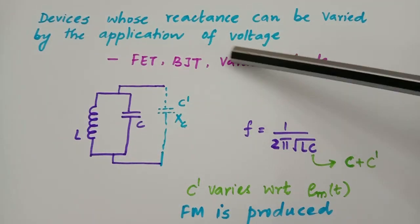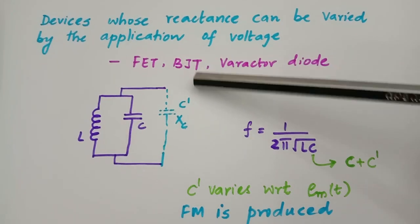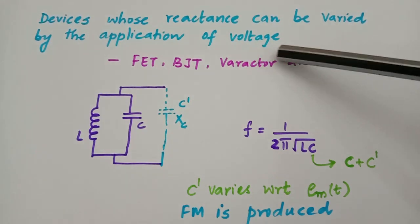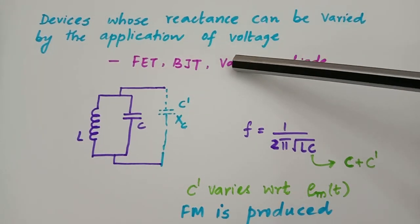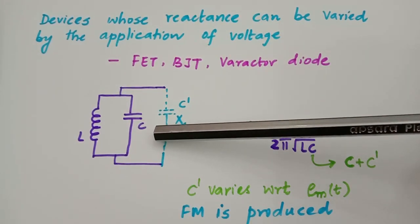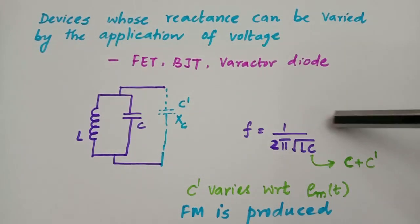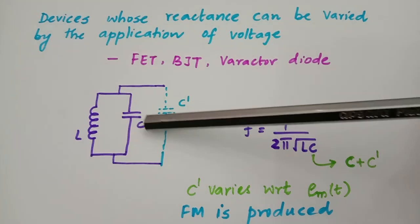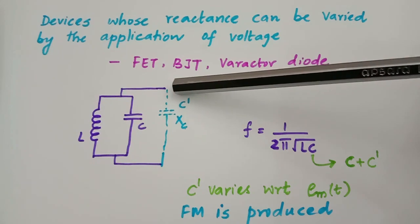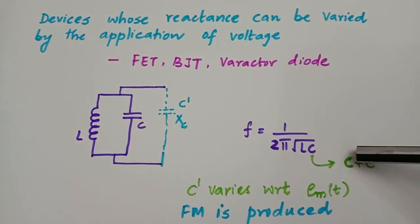FET, BJT, and varactor diode are some of the devices which can be used in a reactance modulator. These devices have the property that their reactance can be varied by the application of voltage. What we do is keep these devices across the tank circuit of an oscillator, and we can connect them to the terminals AA' to alter the frequency of oscillation.